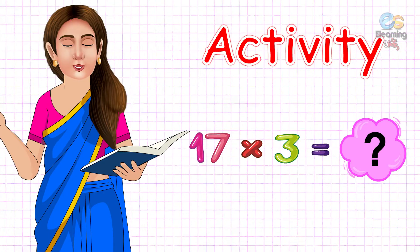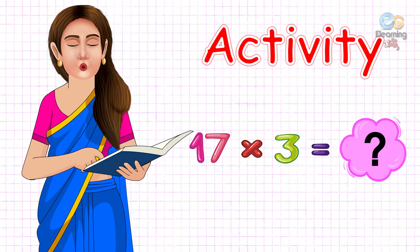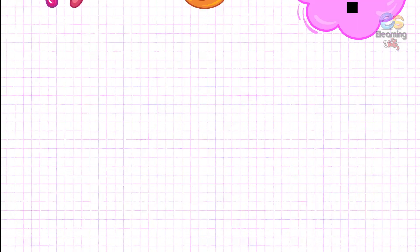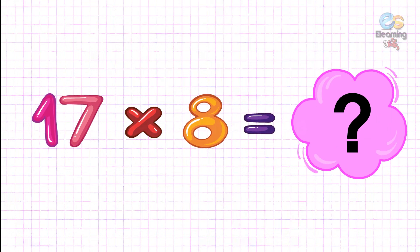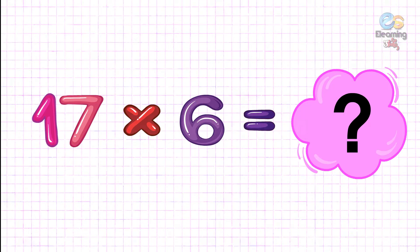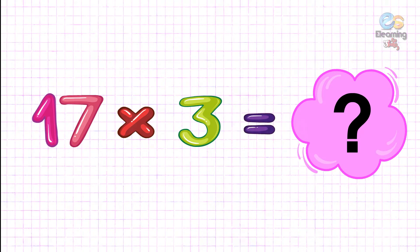Now let's do the next activity. 17 twos are 34, 17 eights are 136, 17 sixes are 102, 17 threes are...